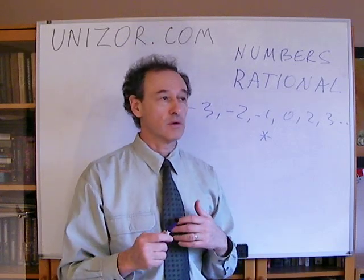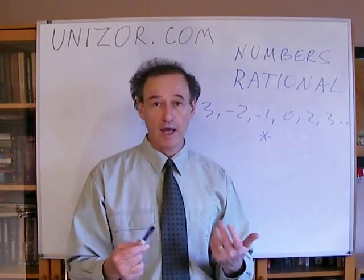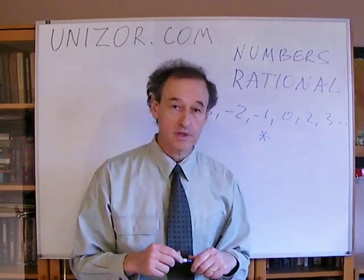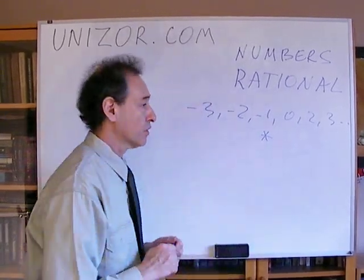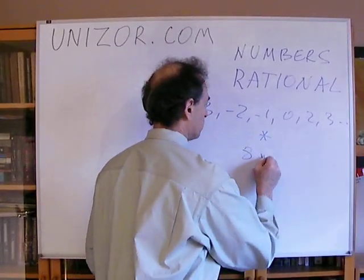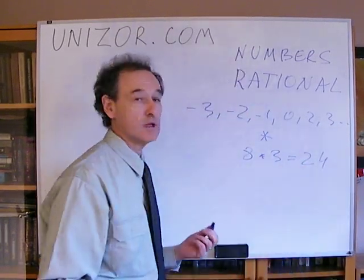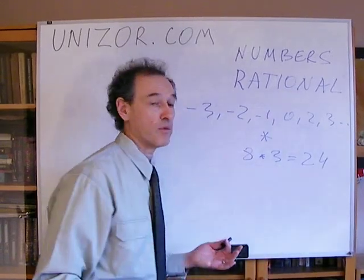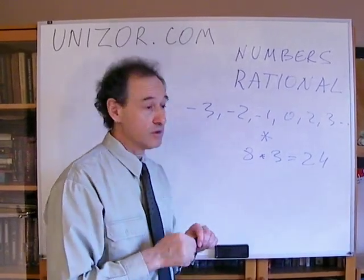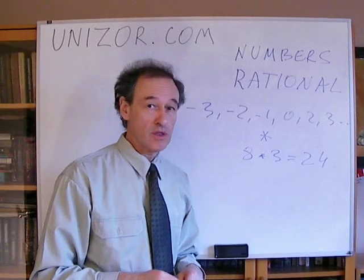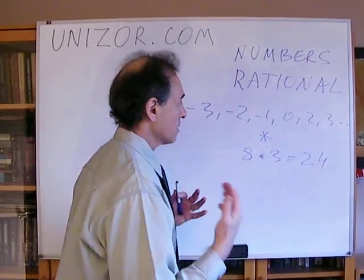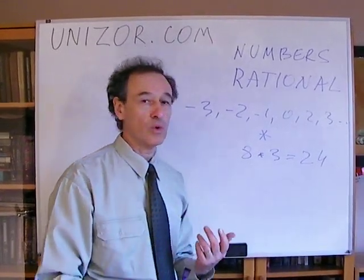The inverse operation cannot be applied to any integer numbers as we have. You can, for instance, multiply 8 by 3 to get 24. And in this case you can inverse operation, which means you can divide 24 by 3, getting 8. But can you divide, let's say, 5 by 7? No, you cannot. So the reverse operation is not always possible.